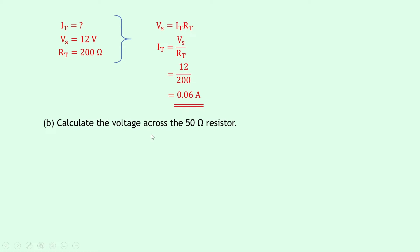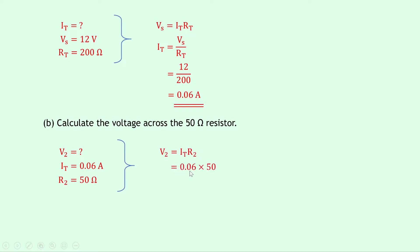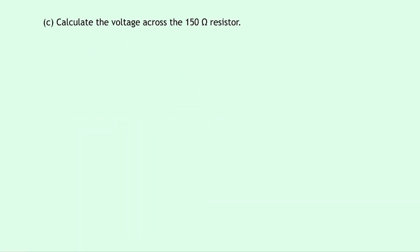Part b asks to calculate the voltage across the 50 ohm resistor. We're finding V2. IT is 0.06 amps and R2 is 50 ohms, so V2 equals IT times R2 equals 0.06 times 50, which gives 3 volts.